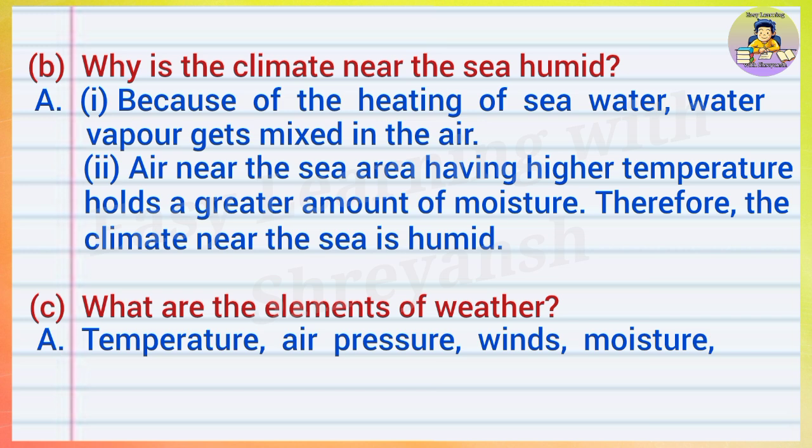(c) What are the elements of weather? Answer: Temperature, air pressure, winds, moisture, and precipitation are the elements of weather.